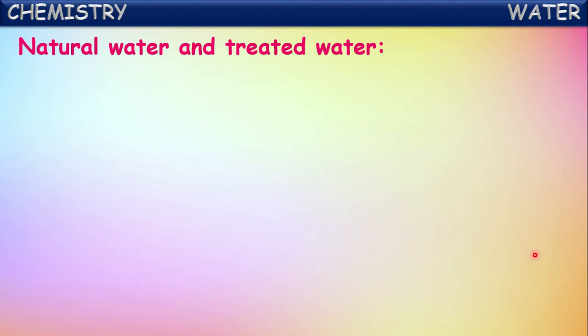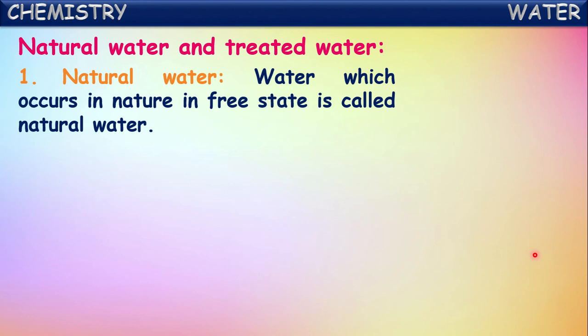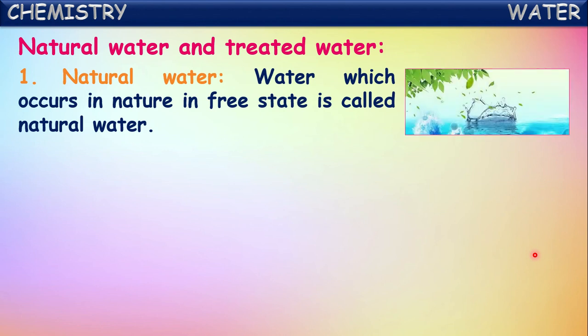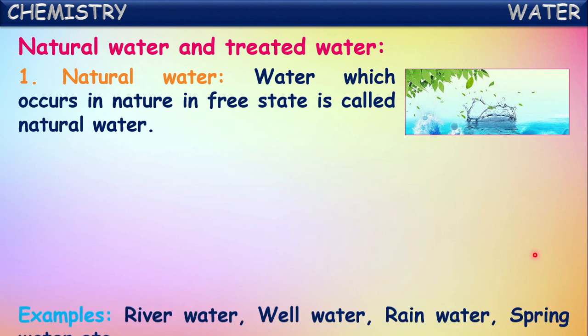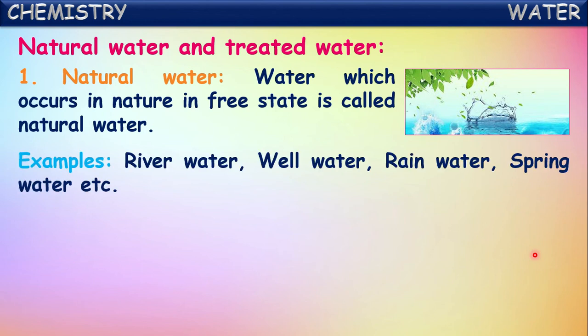Now let us see about natural water and treated water. Natural water means water which occurs in nature in a free state. Examples of natural water are river water, well water, rain water, and spring water - all different forms of water existing in nature naturally.